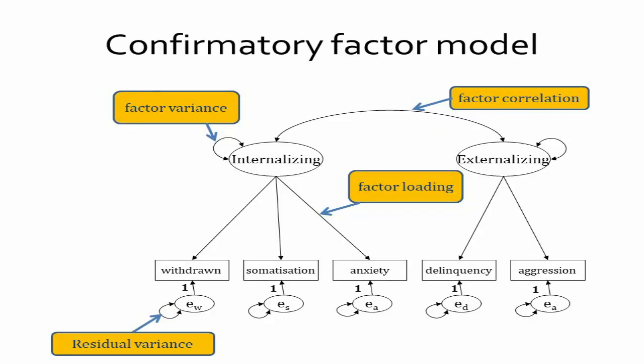We could take this theoretical background knowledge and use it when building the model. We could specify our model a priori so that there is one factor labeled 'internalizing' with loadings on the first three items, and a different factor labeled 'externalizing' with loadings on the final two items. Using our theoretical knowledge we could also allow these two factors to be correlated.